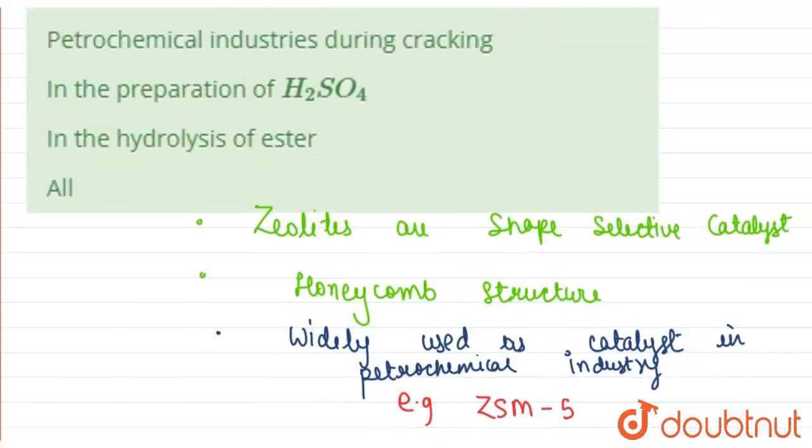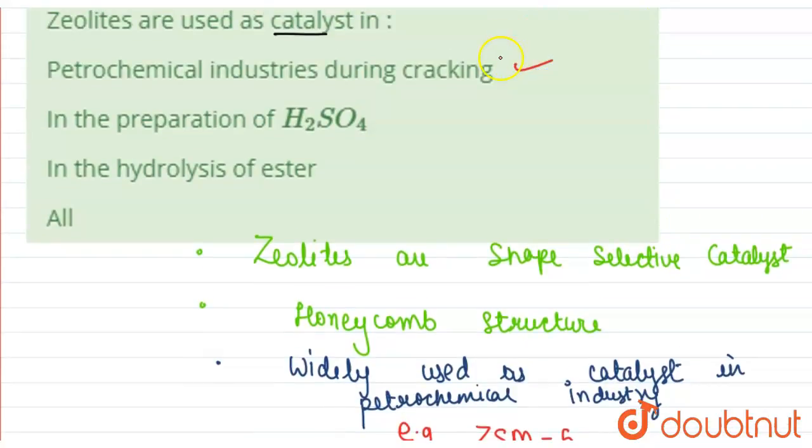Zeolites are used as catalyst in petrochemical industry during cracking. They are not used in the preparation of H2SO4 or in the hydrolysis of ester.